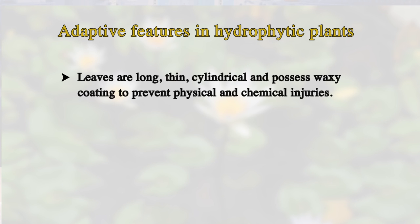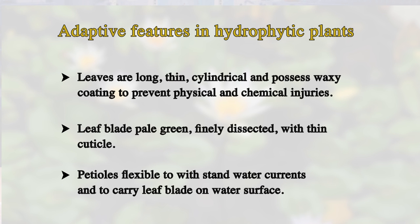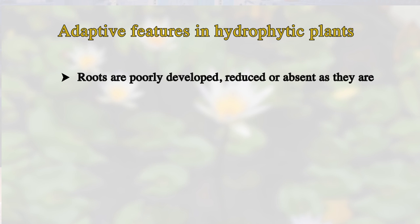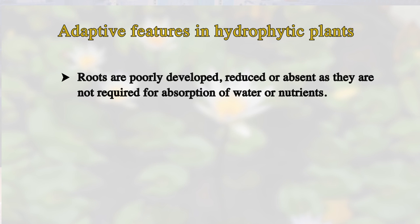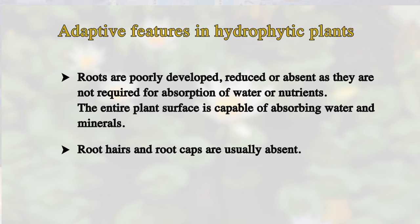We observe the following adaptive features in these plants. Leaves are long, thin and cylindrical, and possess a waxy coating to prevent physical and chemical injuries. The leaf plate is pale green and finely dissected with a thin cuticle. Petioles are flexible to withstand water current and to carry the leaf plate on the water surface. Roots are poorly developed, reduced or absent, as they are not required for absorption of water or nutrients. The entire plant surface is capable of absorbing water and minerals.